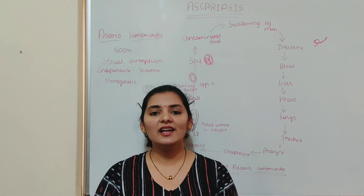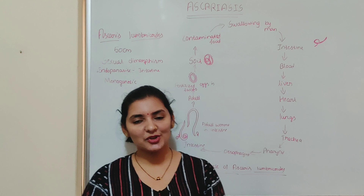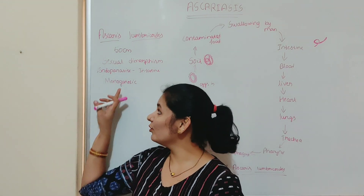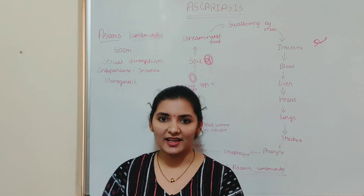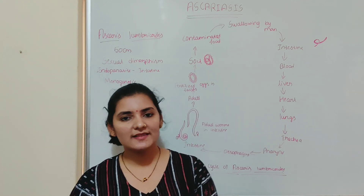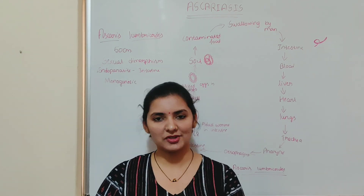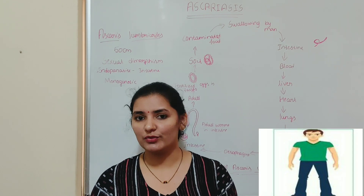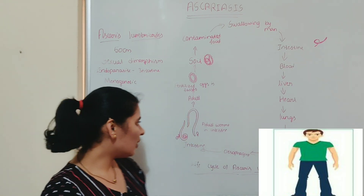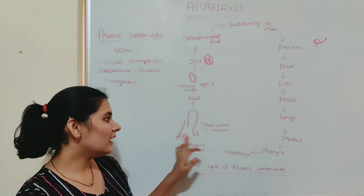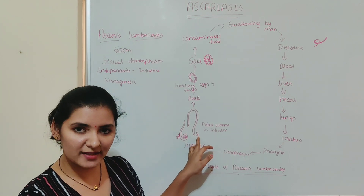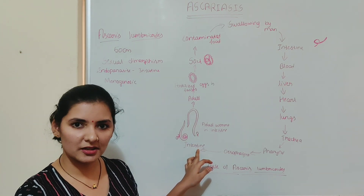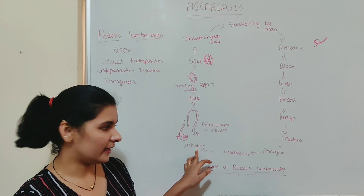Now let me discuss the life history of roundworm. The life cycle of Ascaris lumbricoides is monogenetic in nature. Monogenetic means it requires only one host to complete its life cycle, and the host is man. Copulation of adult male and female Ascaris lumbricoides takes place in the intestine of the host.